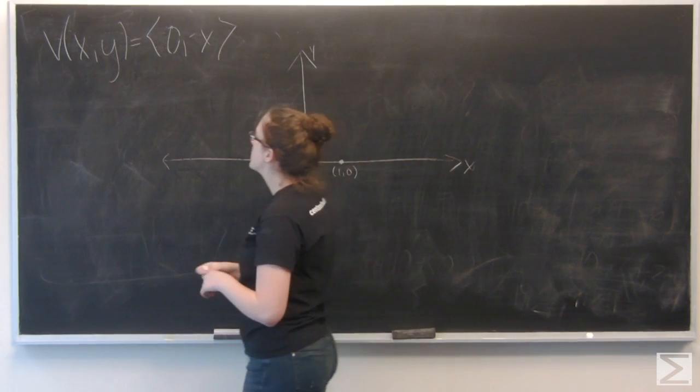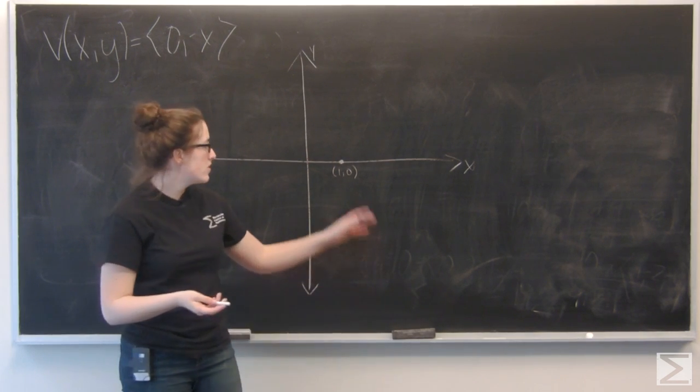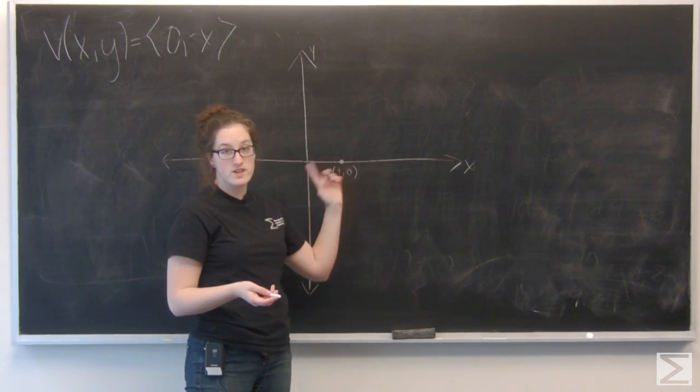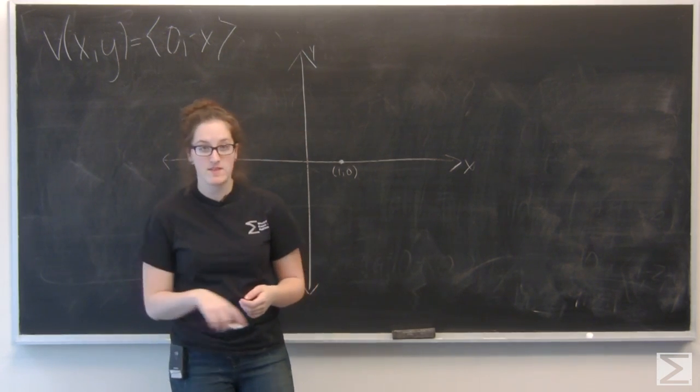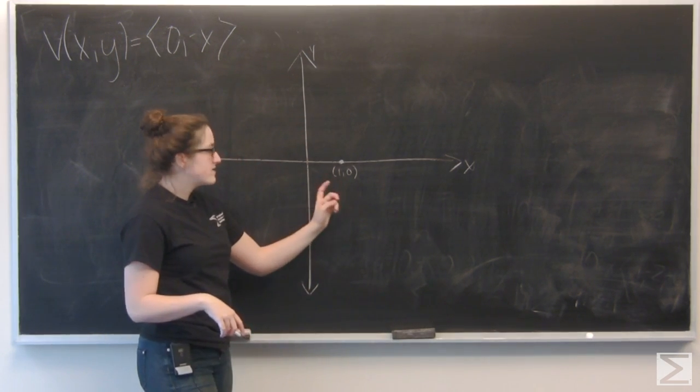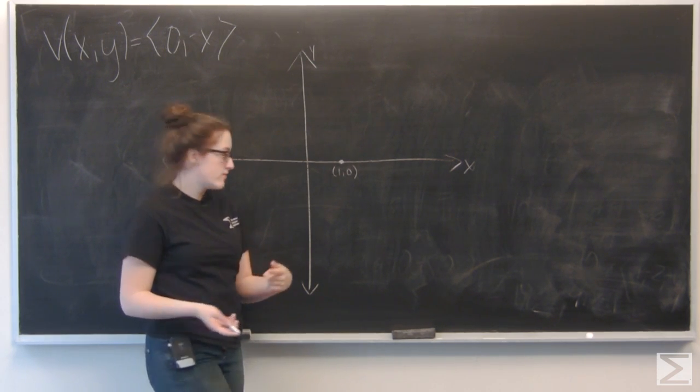Well, I know that my i component is going to be 0, so I'm not traveling horizontally at all. And then my j component is going to be the negative x value of that point. Well, here x is 1, so my j component is going to be negative 1.